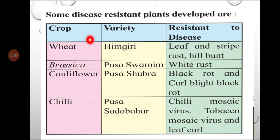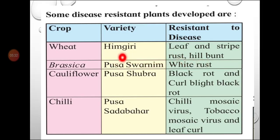This table is very important for exams — one or two questions come from it every time. In wheat, the variety Heemgiri is resistant to leaf and stripe rust and hill bunt diseases. In Brassica, the variety Pusa Swarnim is resistant to white rust. In cauliflower, the variety Pusa Shubhra is resistant to black rot and curl blight. In chilli, the variety Pusa Sada Bahar is resistant to chilli mosaic virus, tobacco mosaic virus, and leaf curl.